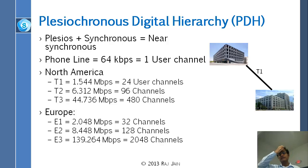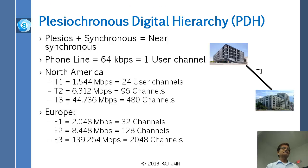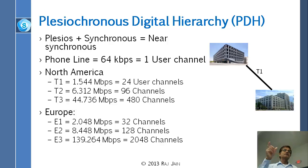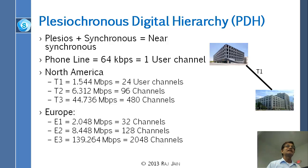Remember Nyquist — you have to sample at twice the frequency. So to get 4 kilohertz voice, you need 8,000 samples per second. Each sample is 8 bits, and that is also determined by survey — because nowadays if you want to listen to music, telephone quality is not good, so you really need more than 8 bits and more than 8,000 samples per second. But anyway, 8,000 samples at 8 bits per sample gives you 64 kilobits per second.